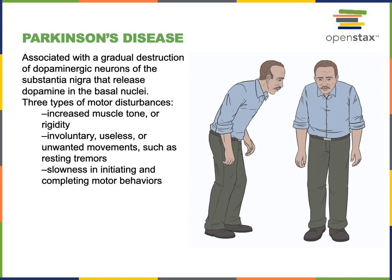Parkinson's disease is a neurodegenerative disease involving loss of the dopaminergic neurons of the substantia nigra, leading to impaired motor control. Common symptoms of Parkinson's disease include increased muscle tone and stiff rigid muscles, unwanted involuntary movements such as a resting tremor, and a characteristic slow, hunched, shuffling walk.